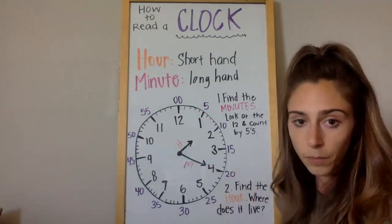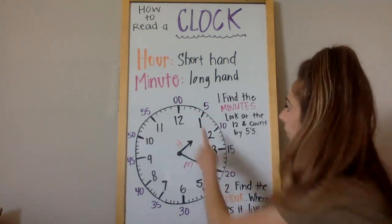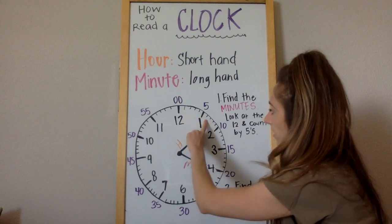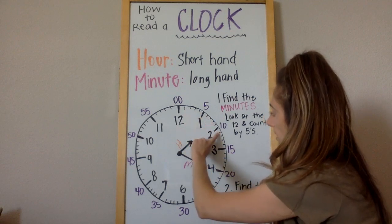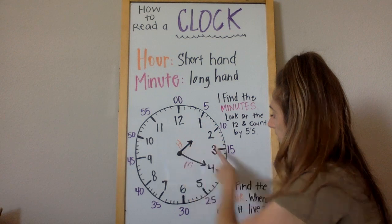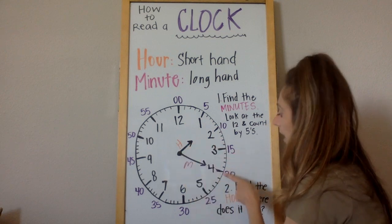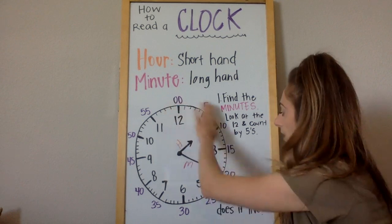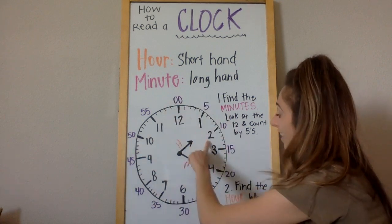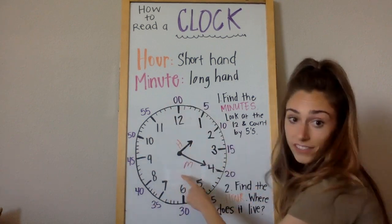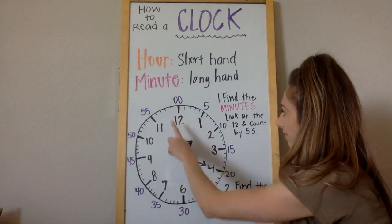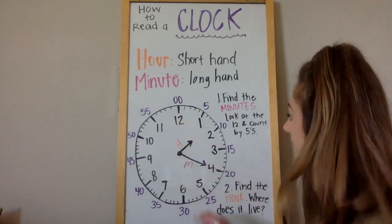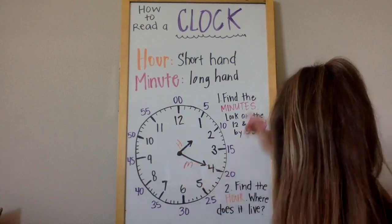Now why do we count by fives? Look at these little ticks in between — there are five ticks between each number, counting all the way to 20 as we go around the clock. So it's easier if we just count by fives. Five, ten, fifteen, twenty minutes. It is 20 minutes.